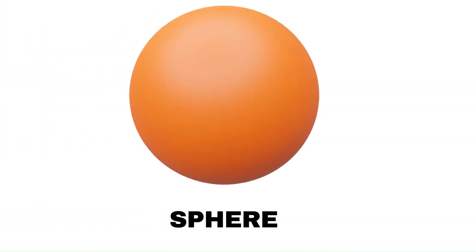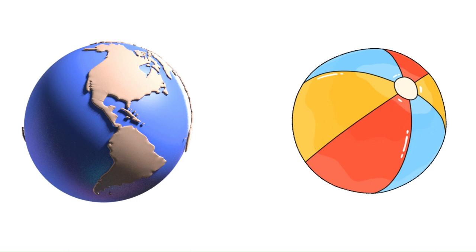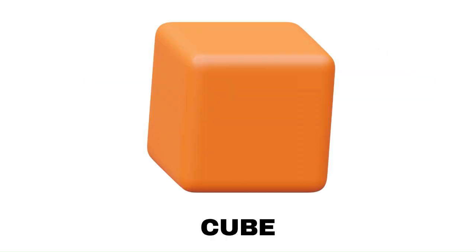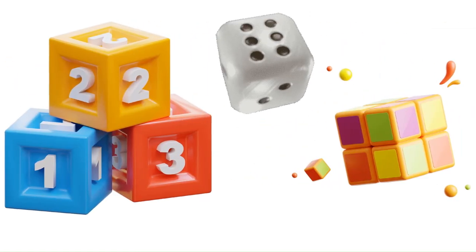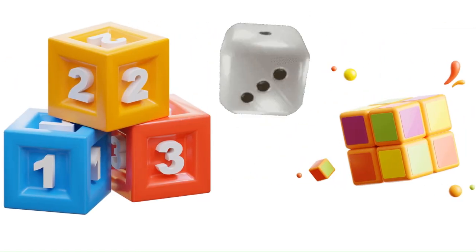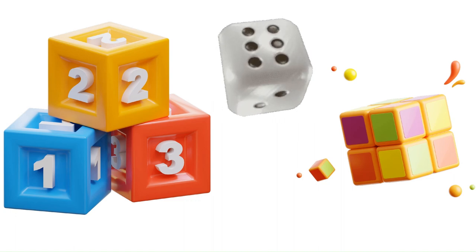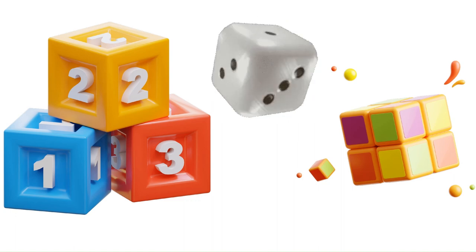This 3D shape is called a sphere. The earth and the ball are both spheres. This 3D shape is called a cube. Building blocks, Rubik's cube, and dice are a few examples of a cube.